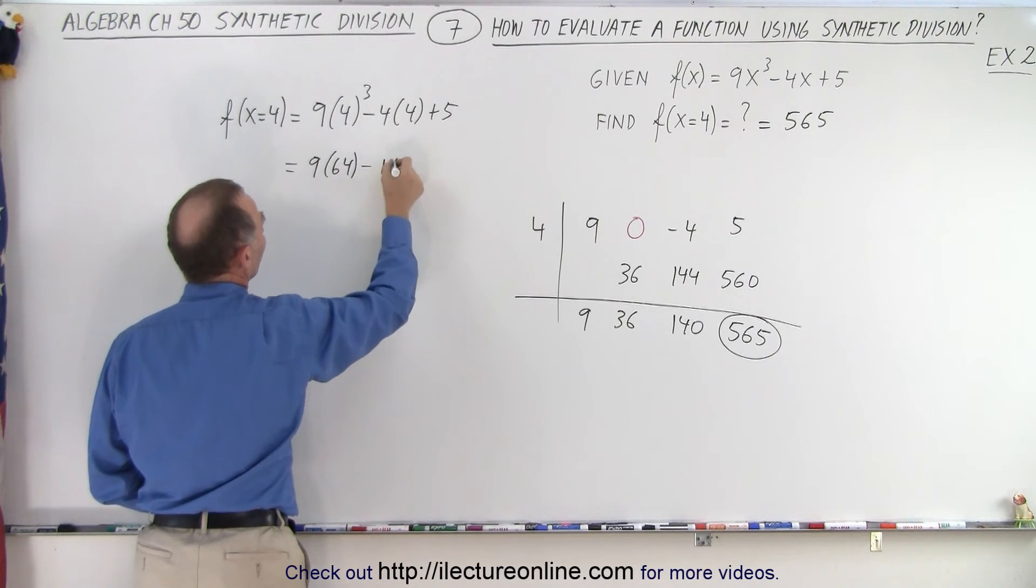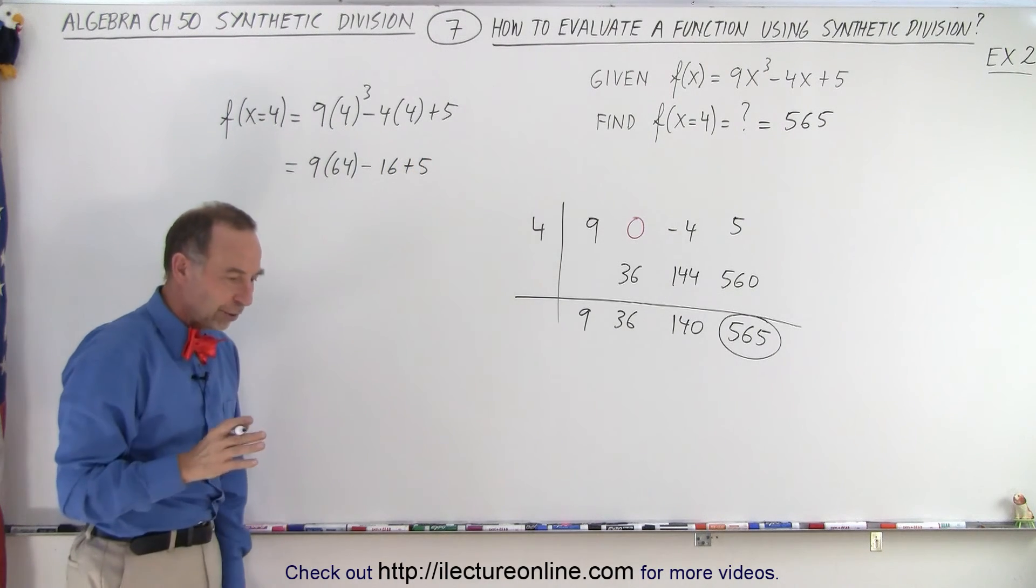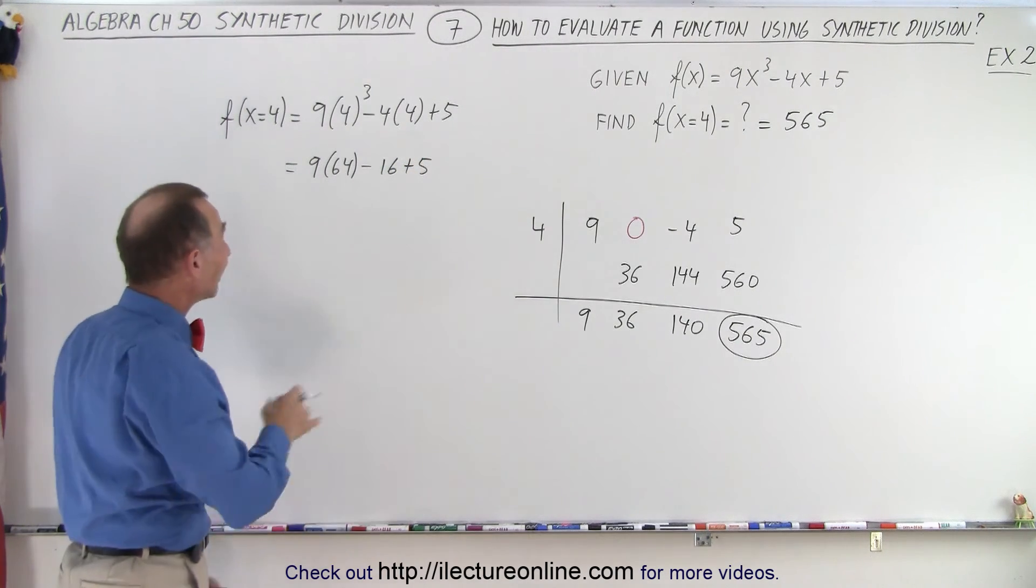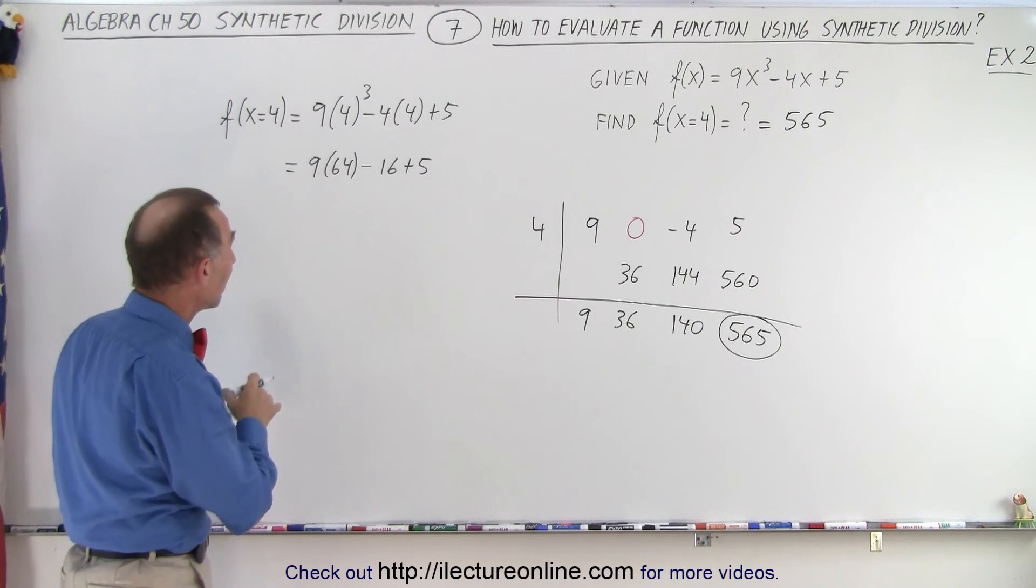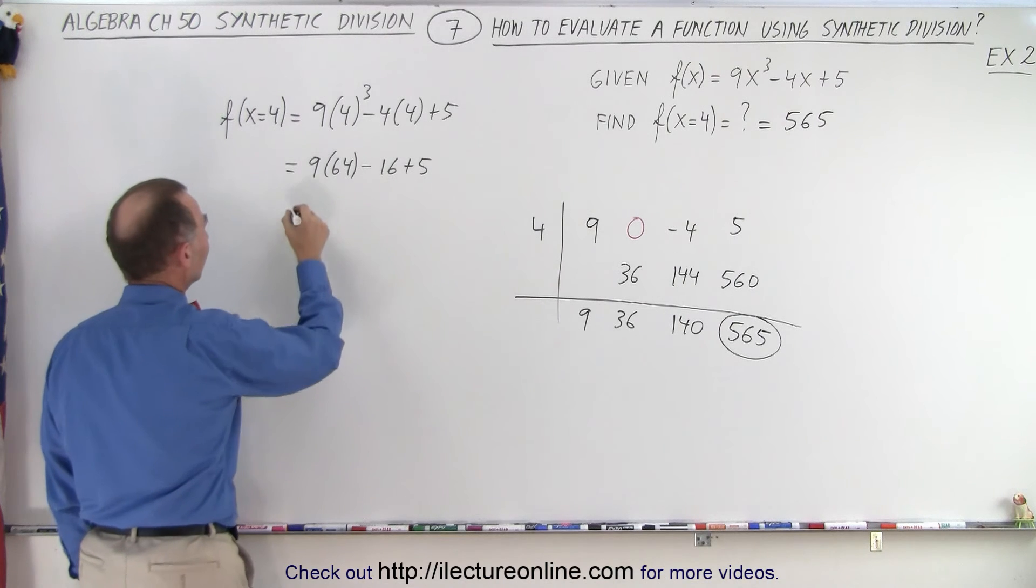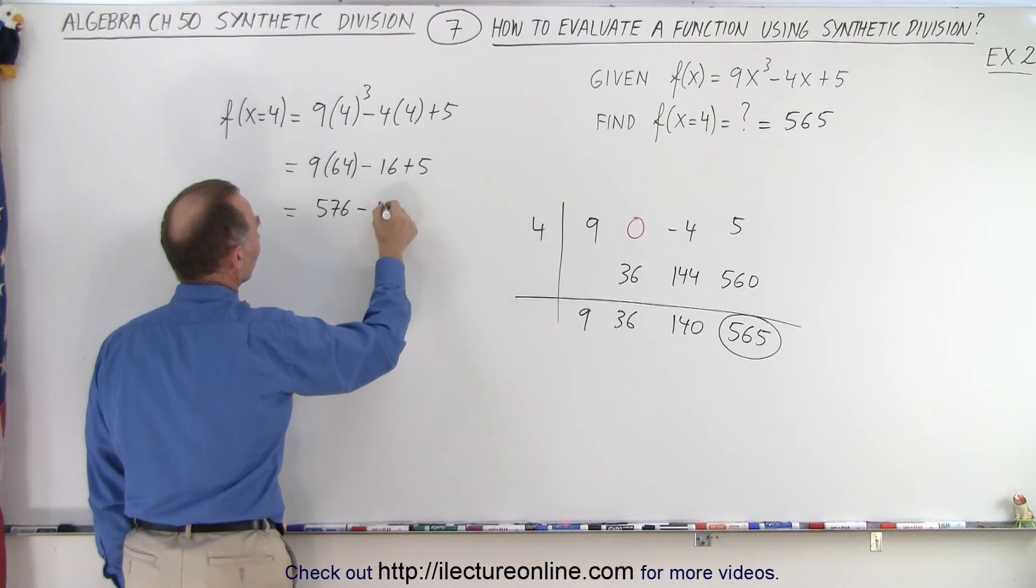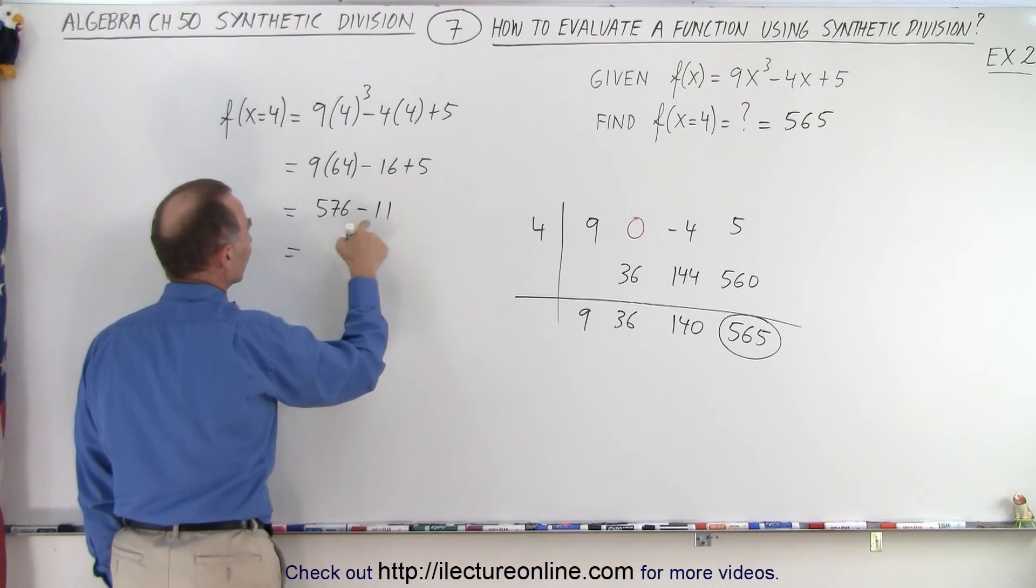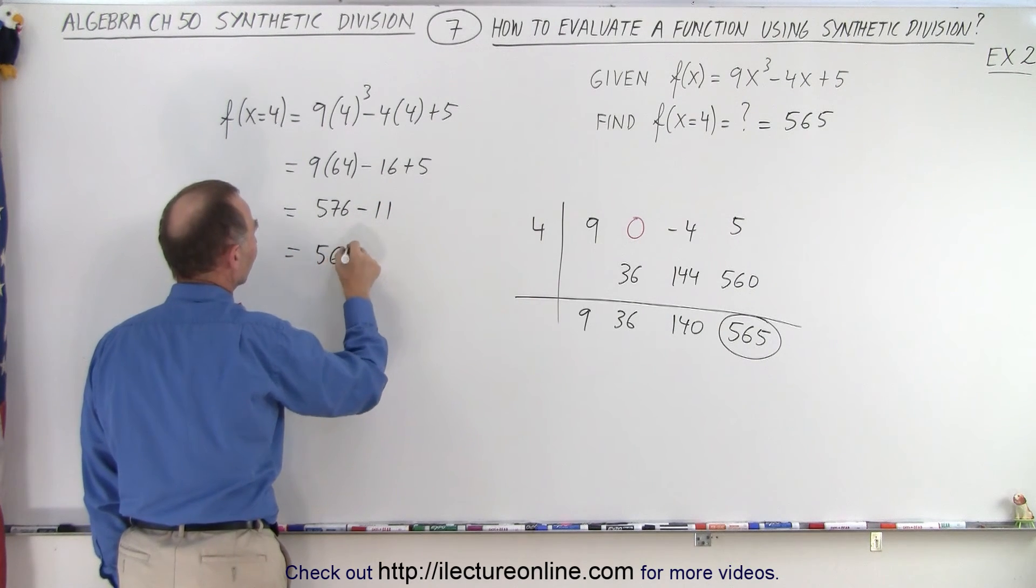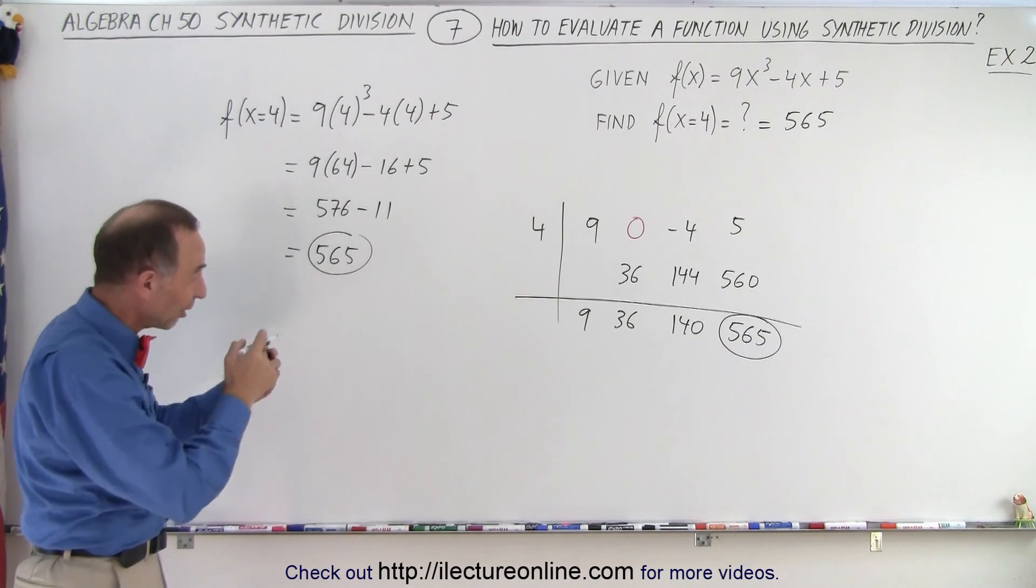So 4 cubed, that's 64, so we have 9 times 64 minus 4 times 4 which is minus 16 plus 5. 9 times 64 is 10 times 64 minus 64, so that's 640 minus 64, that's 576. So equal to 576, and minus 16 plus 5 is minus 11. 576 minus 11 is 565.